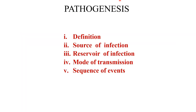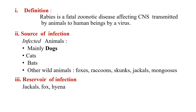The most important part is the pathogenesis. We will talk about the definition, source of infection, reservoir of infection, mode of transmission, and the sequence of events. Rabies is a fatal zoonotic disease affecting the central nervous system, transmitted by animals to human beings by a virus. It is fatal, it is a zoonotic disease, and it affects the CNS.